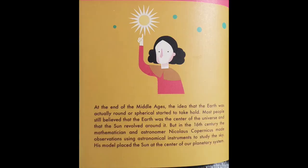At the end of the Middle Ages, the idea that the earth was actually round started to take hold. Most people still believed that the earth was the center of the universe and that the sun revolved around it. But in the 16th century, the mathematician and astronomer Nicolaus Copernicus made observations using astronomical instruments to study the sky, and his model placed the sun at the center of our planetary system.